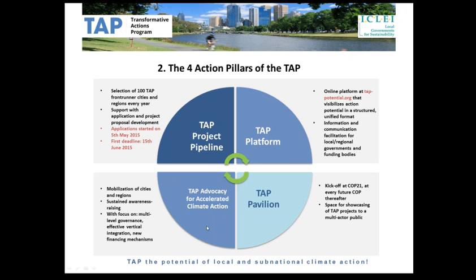The fourth and final pillar is TAP advocacy for accelerated climate action. This work builds on previous achievements in local climate advocacy and seeks to diversify and strengthen it. It will raise awareness of the potential of transformative sub-national climate action, deepen dialogue with national governments promoting effective vertical integration between different levels of government, reinforce engagement with international and national funding bodies and development agencies, and continue to coordinate information sharing and debates on local and sub-national climate finance in the realm of international climate negotiations.